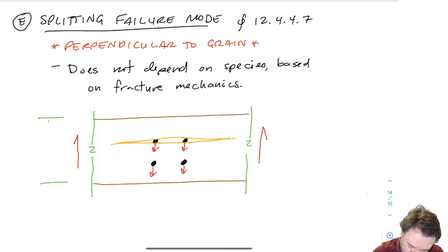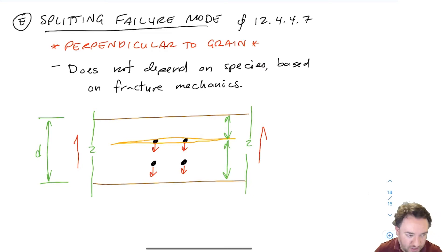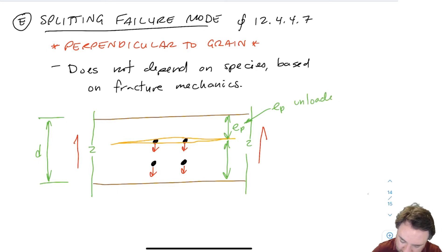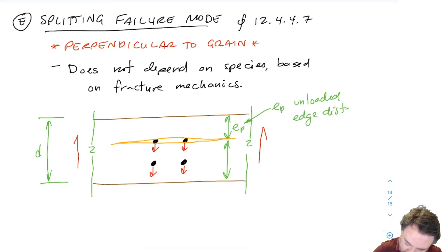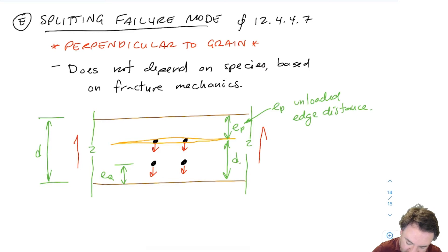Let's recall that the depth of this piece of wood is D. I have two different distances here, which depends on the way that the bolts are going. We have EP, which is our unloaded edge distance. We have a loaded edge distance EQ as well, but we're not going to use that here. What we're going to use is DE, which is our effective depth.